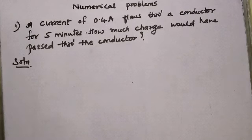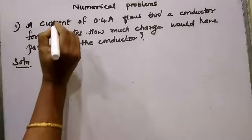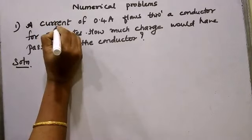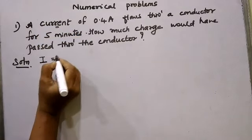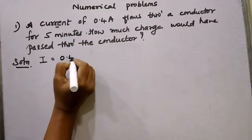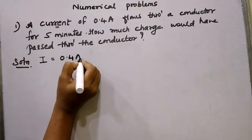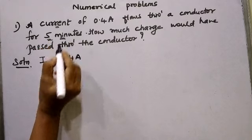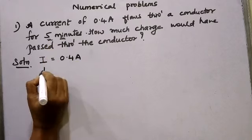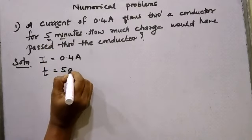Let us take the first numerical problem based on electric current. A current of 0.4 amperes flows through a conductor for 5 minutes. Current I equals 0.4 amperes. Time is 5 minutes. Whenever we apply the formula, the SI unit of time is seconds, so minutes must be converted into seconds by multiplying by 60. Therefore, time equals 5 × 60 equals 300 seconds.